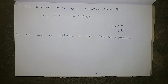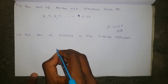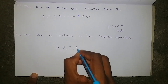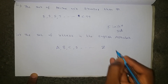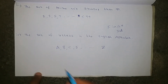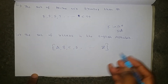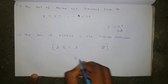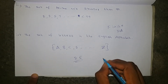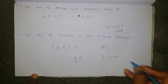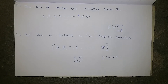Next question: the set of letters in the English alphabet. In the English alphabet we have A, B, C, D and so on till Z. We know very well that there are 26 letters, which is a countable thing. So this is a finite set.